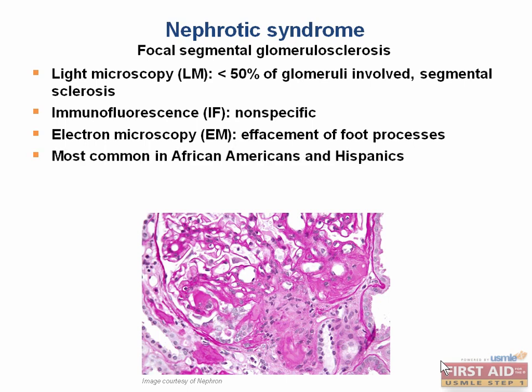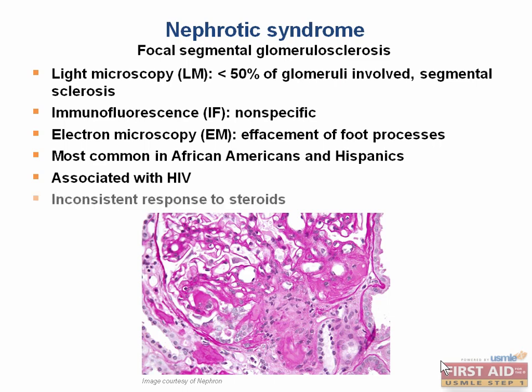FSGS is a common cause of nephrotic syndrome in adults and is the most common glomerular disease in African Americans, Hispanics, and HIV patients. There's usually an inconsistent response to steroid treatment.